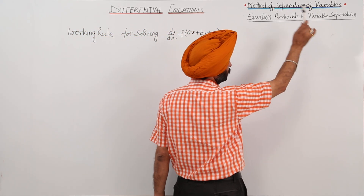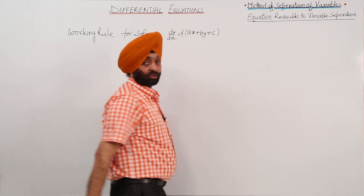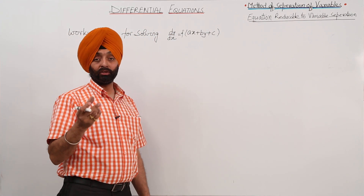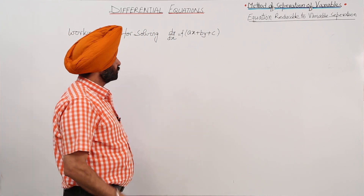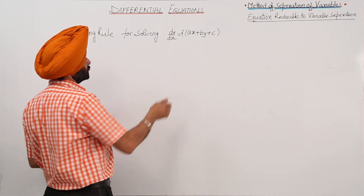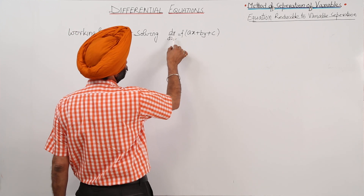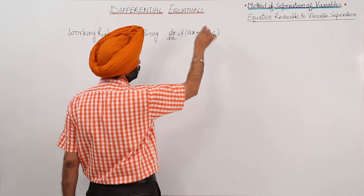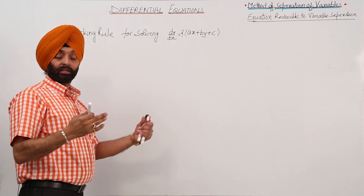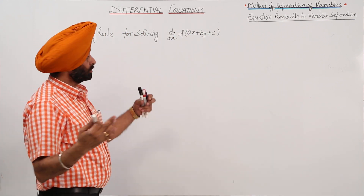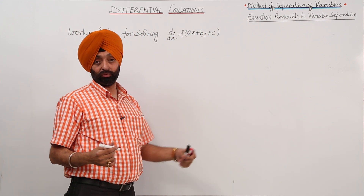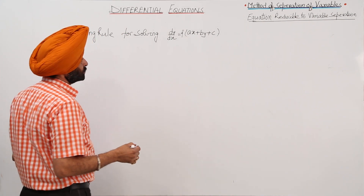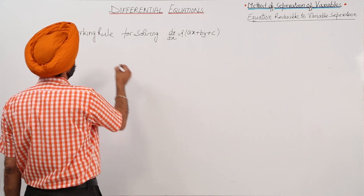Equation reducible to the variable separation. Now, a little bit new thing for us. If the equation is in the form of dy by dx is equal to ax plus by plus c, then directly you can't separate the variables. So we are having some steps for it.